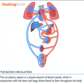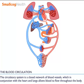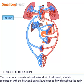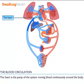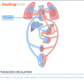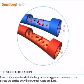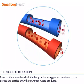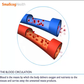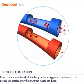The circulatory system is a closed network of blood vessels which, in conjunction with the heart, allows blood to flow throughout the body. The heart is the pump of the system, moving blood continuously around the body. Blood is the means by which the body delivers oxygen and nutrients to the tissues and carries away the unwanted waste products.